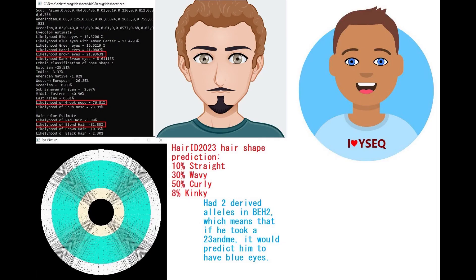With my Nashakot tool, he is predicted to have either green or brown eyes. My AKAT 3.2 tool is predicting him to have green eyes, whereas Nashakot is predicting brown eyes, so there is a little bit of disagreement there. He is also predicted to have blonde hair, a Greek-shaped nose, and curly hair at 50%, which is why I depicted him with blonde hair, a Greek-shaped nose, and curly hair.